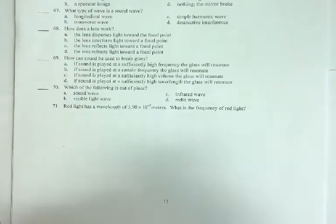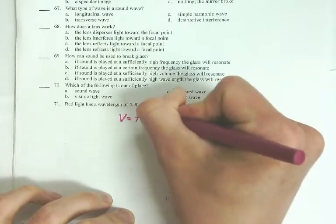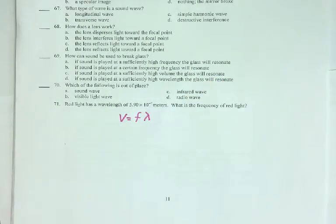Wavelength and frequency are related by this equation: V equals F lambda. That's the frequency and wavelength, how they're related together.